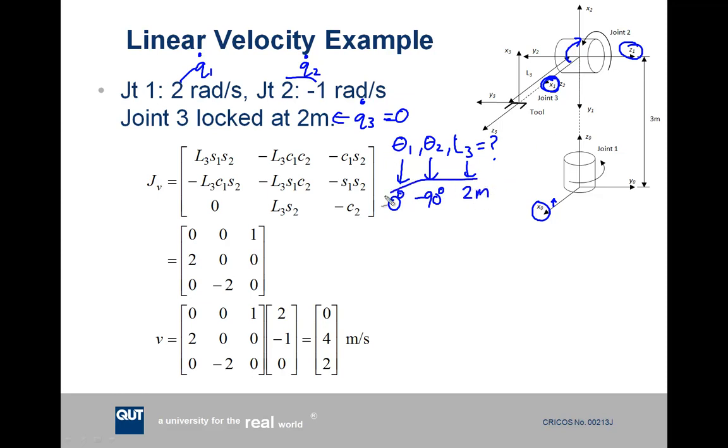So these are the numbers that we plug into this matrix. And if you plug that all in, you get this answer here. But we also need to then go, well, velocity of our tool point is JV times our Q variables, so our joint variables. Joint 1 is 2 rads per second, joint 2 is negative 1 rads per second, joint 3 isn't moving, so it's 0 meters per second.